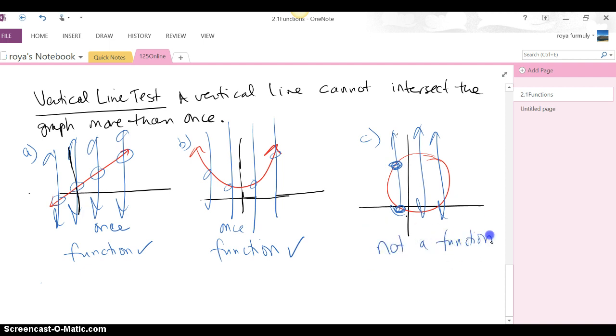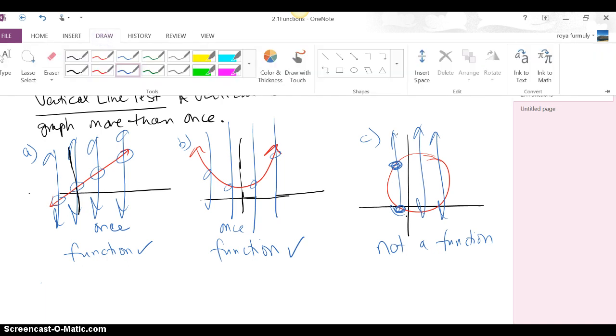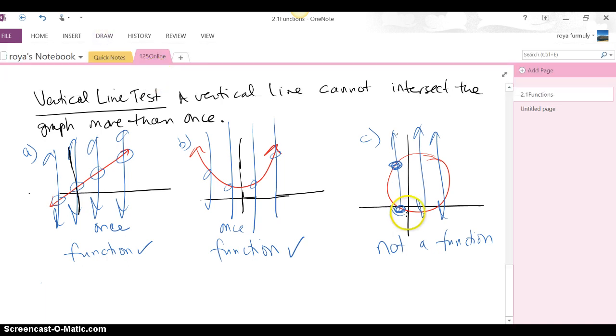That basically says that for this x value right here, let's go look at a different color. For this x value, let's say right here, whatever that x value is, I have two y values. I have this y value down here, which I don't know, could be negative one or whatever. And also this y value, which I don't know, maybe 10 or something. So having two y values for the same x value, remember, is not allowed and that's why it's not a function.